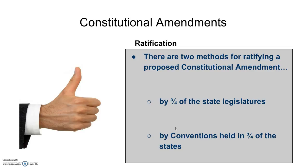Ratification is the second step, and there are also two methods for it. A proposed amendment can be ratified by either three-fourths of the state legislatures or a convention held in three-fourths of the states — either the state governments or the people in those states. Three-fourths of the total number of states have to approve an amendment for it to be ratified. Notice that your fraction here is three-fourths and that ratification happens at the state level of government.